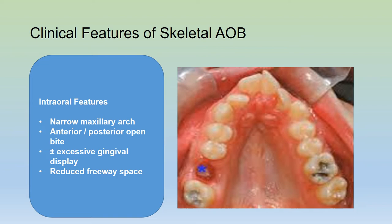The intraoral features of a skeletal open bite include a narrow maxillary arch, and there may be anterior and/or posterior open bite. There will be excessive gingival display and usually a reduced freeway space.